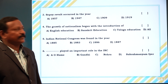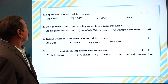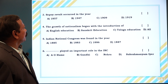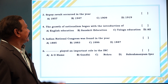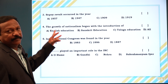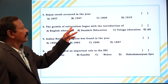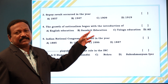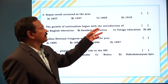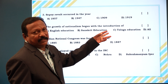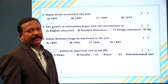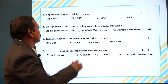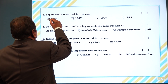Third question: The Sepoy Revolt occurred in the year — A. 1857, B. 1947, C. 1909, D. 1919. Answer is A. 1857.